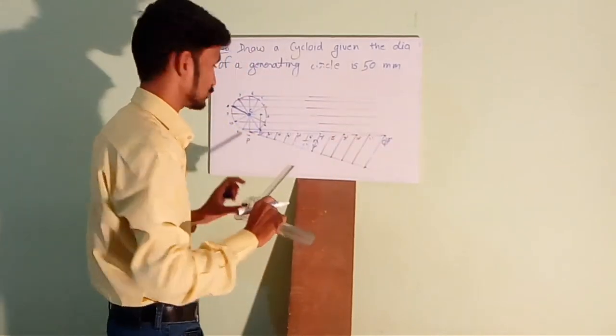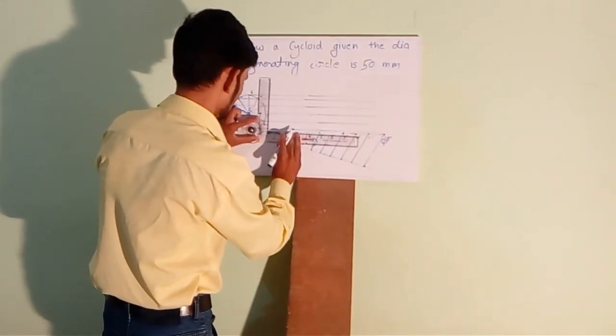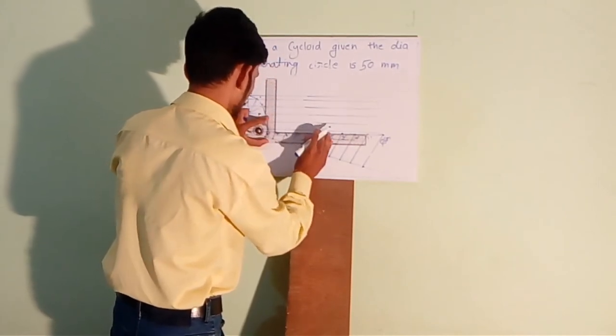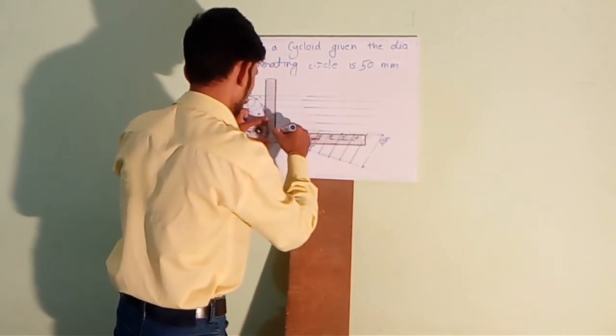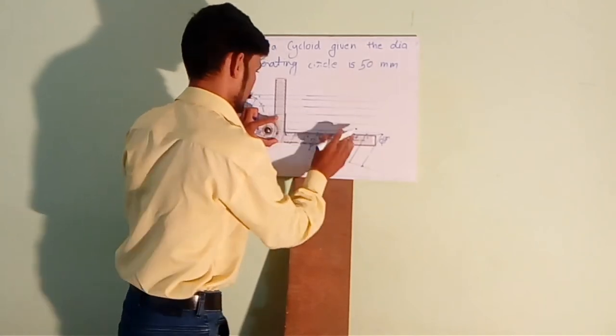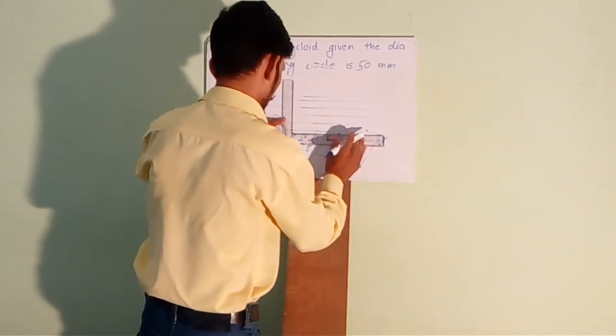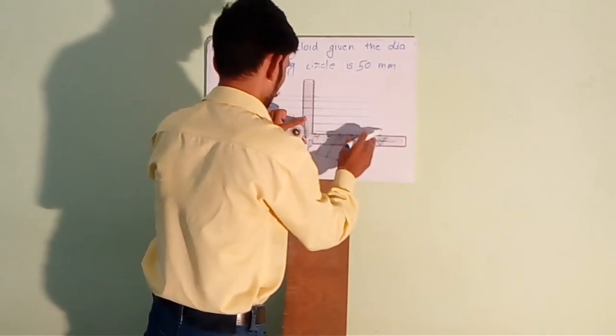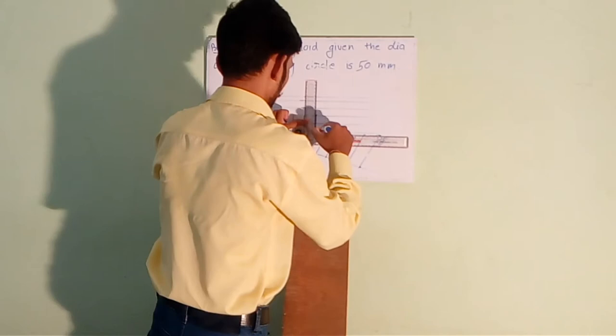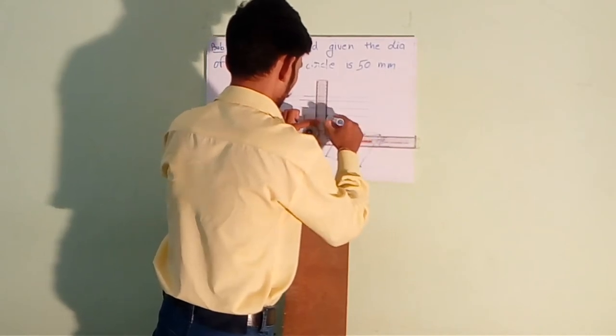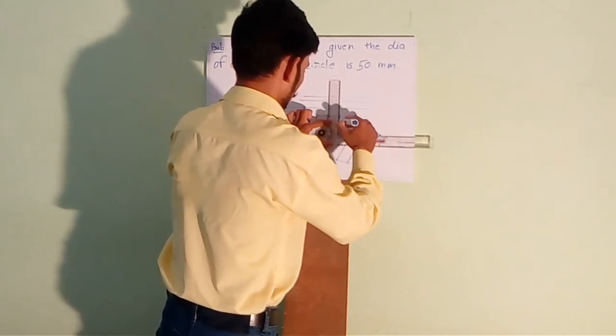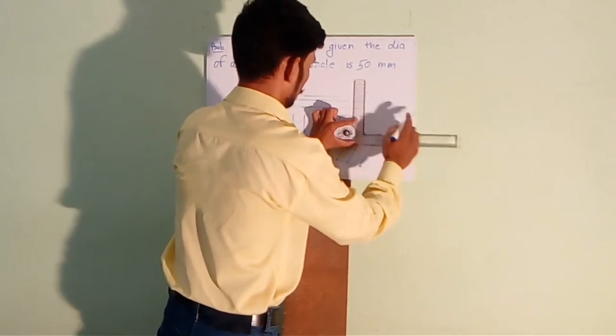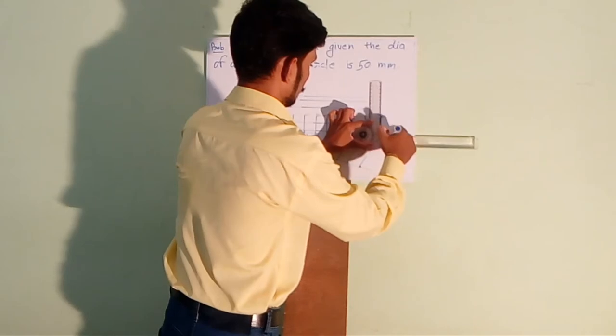So, this line C will be the locus of the circle. So, this line C will be the locus.